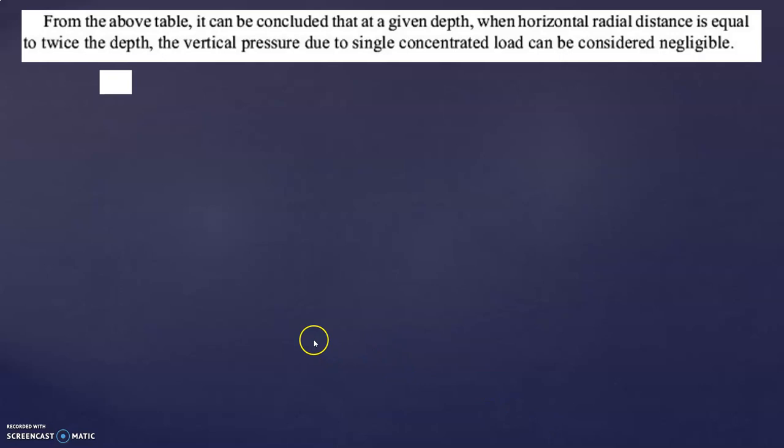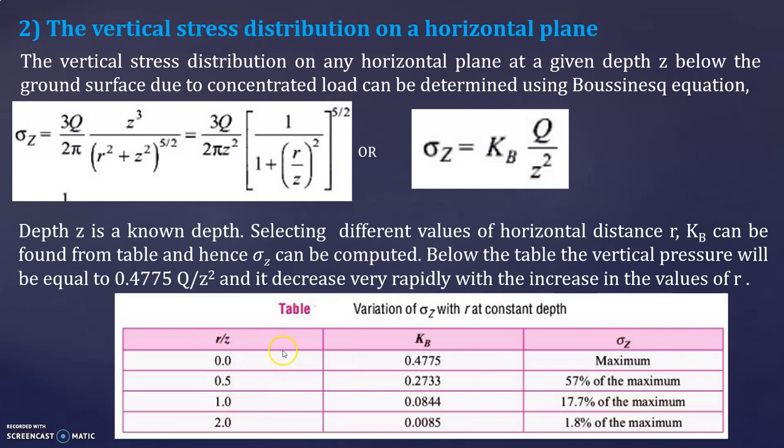From the above table it can be concluded that at a given depth, when the horizontal radial distance is equal to twice the depth, the vertical pressure due to a single concentrated load can be considered negligible — only 1.8% of the maximum stress.